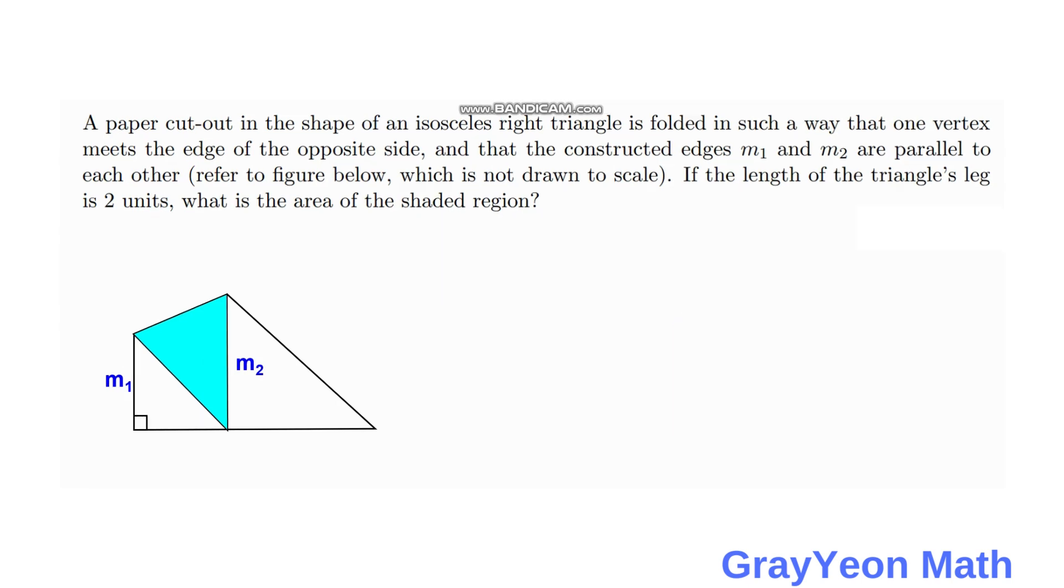So we begin to attack this problem by redrawing this figure as the original isosceles right triangle. We do that by drawing a vertical line from here down to this point, and from this point to that point until these two lines intersect. Then since it is given that the total length of the leg of this isosceles right triangle is 2...